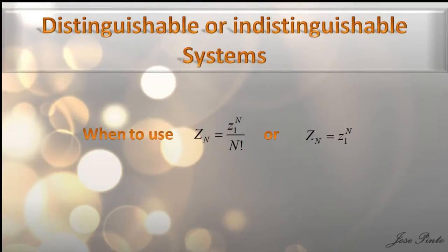Hey guys, how you doing? This section is about going from one particle to many particles when using the partition function. In other words, how do you know when to use the factor of 1 over n factorial?